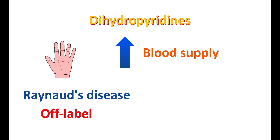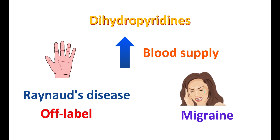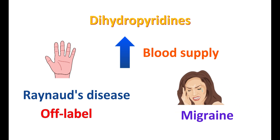Another clinical use is in the treatment of migraine headache. Dihydropyridines can reduce cranial vasodilation, which reduces migraine headache at lower doses. However, at higher doses, dihydropyridines can worsen migraine headache by increasing cranial vasodilation. Overall, dihydropyridines are mainly used for the treatment of hypertension and angina.